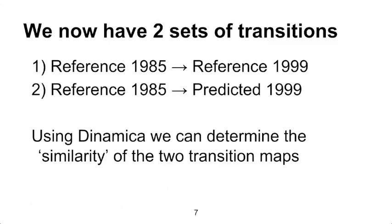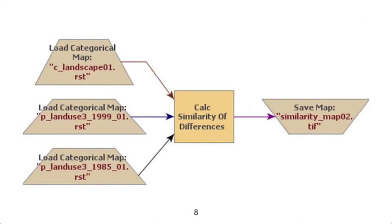Dynamica has several models which can be used to validate land cover maps in different ways. But today, we will be determining a similarity score between the reference and predicted transitions. The calculate similarity of differences functor compares the reference and predicted transition maps by creating two new similarity maps. These two maps show how well the transitions in the reference transition map match the transitions in the predicted transition map, and vice versa. This functor takes as an input three categorical land cover maps, and outputs a single similarity map which has values between 0 and 1.